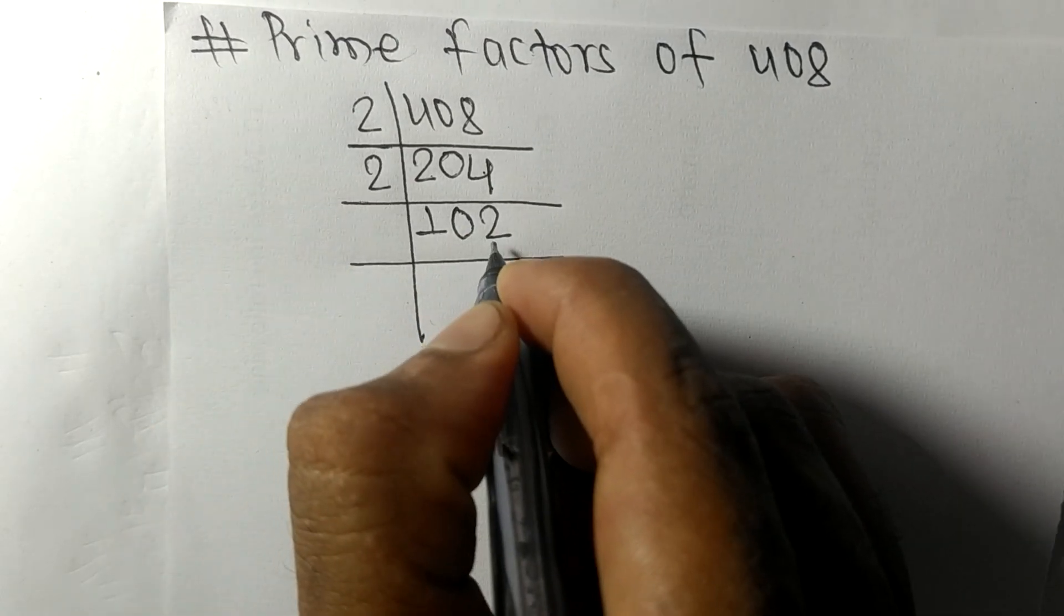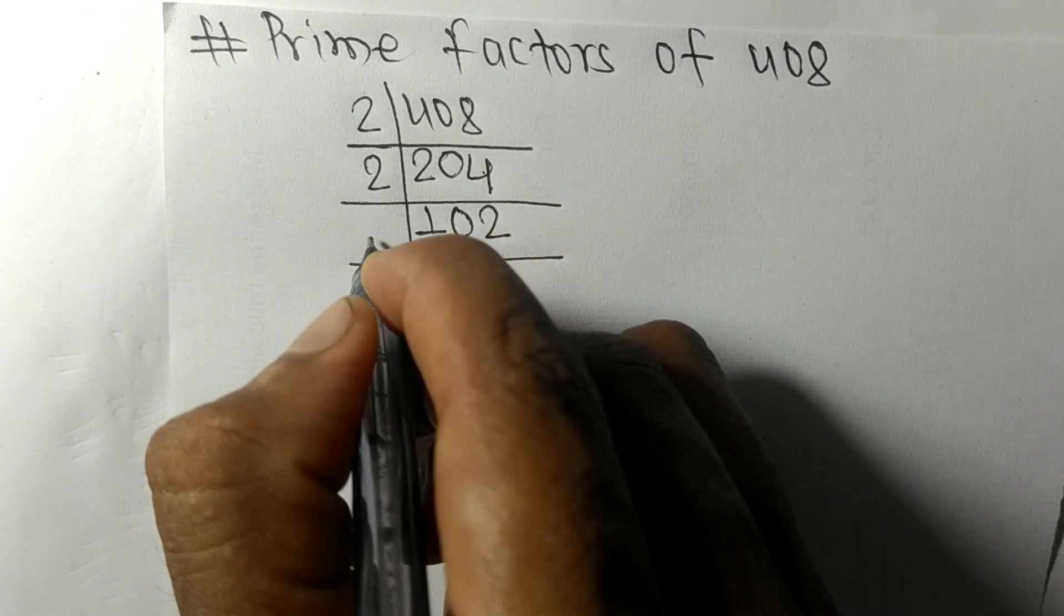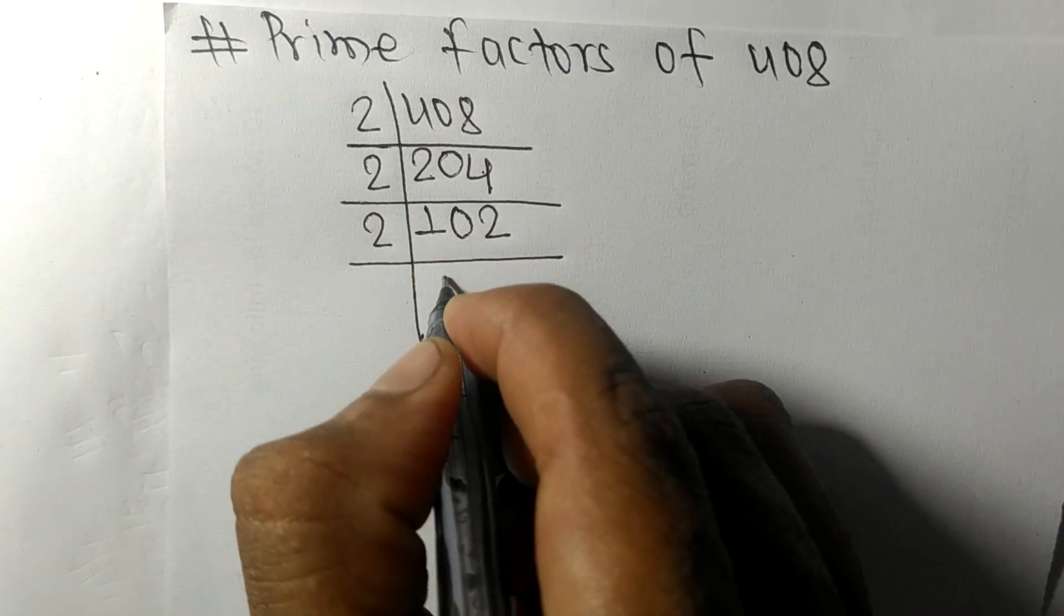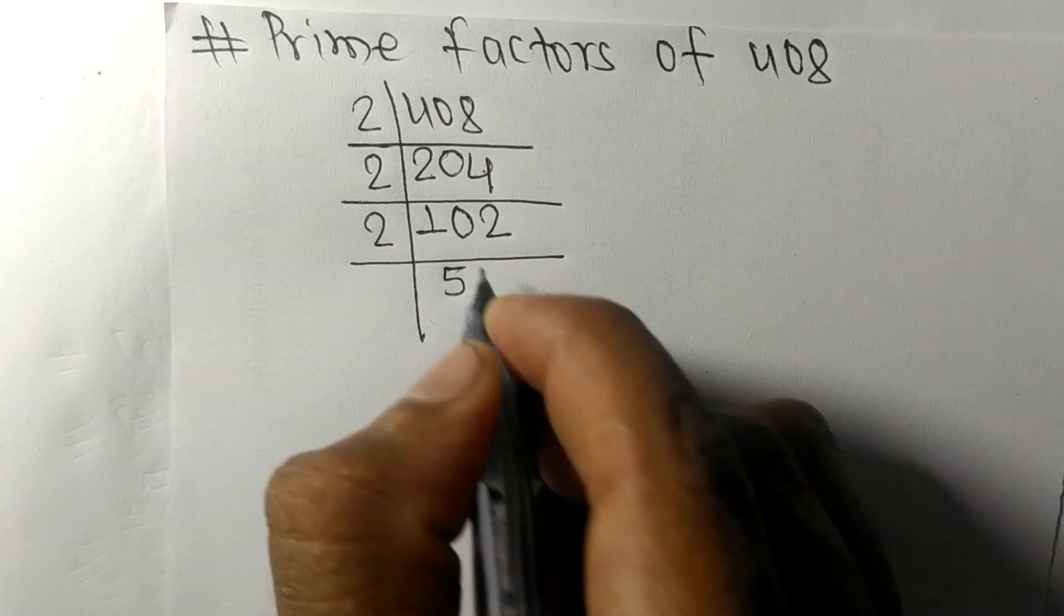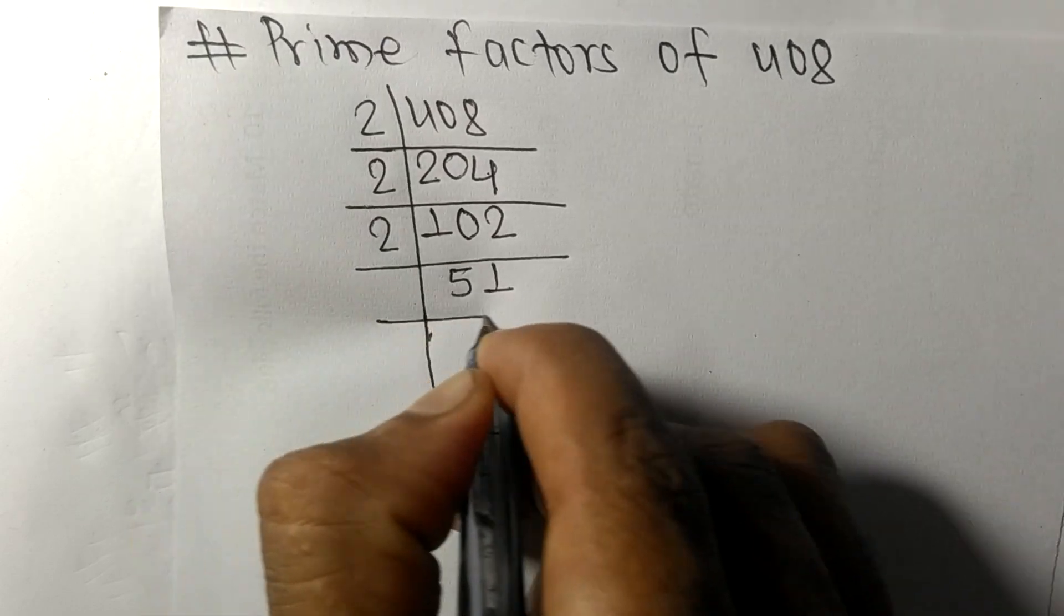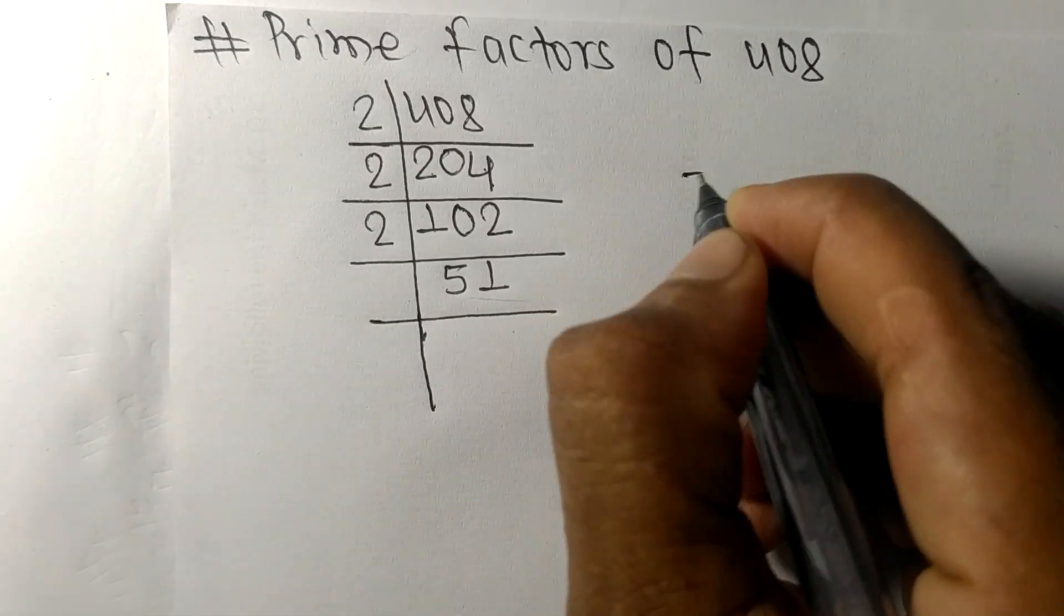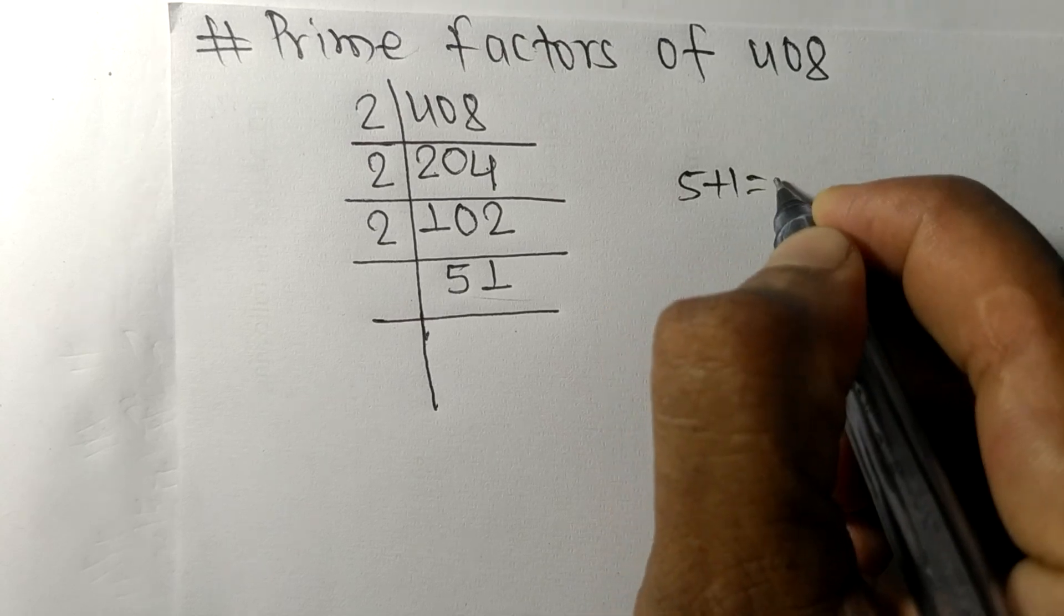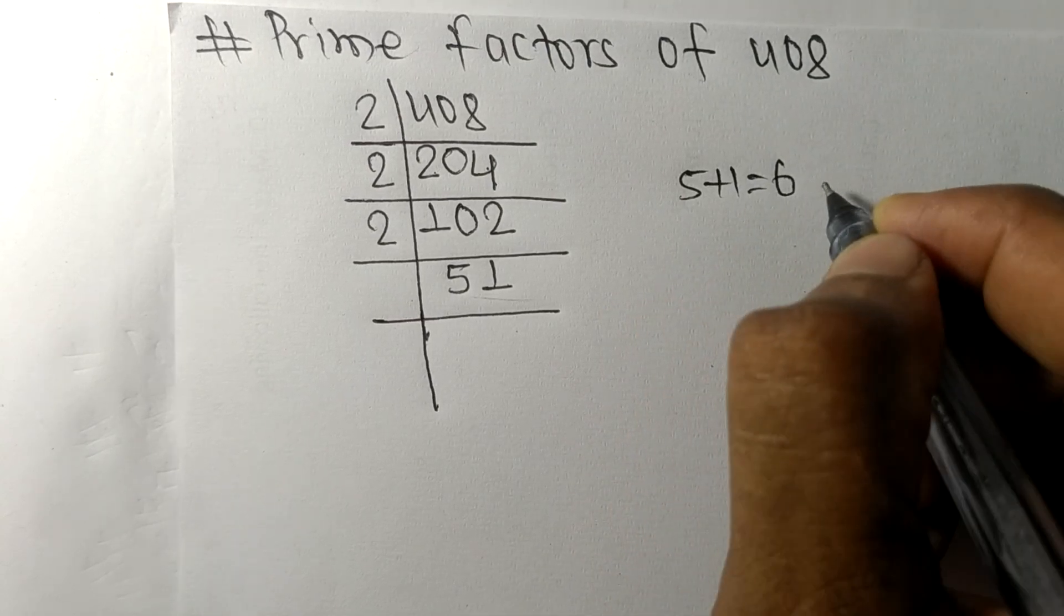2 times 5 means 10, 2 times 1 means 2. So now we got 51, and when we add 5 plus 1 then we get 6, and 6 is exactly divisible by 3, so 51 is also divisible by 3.